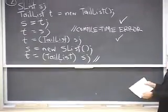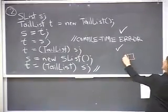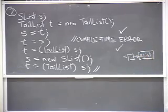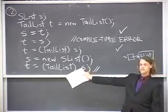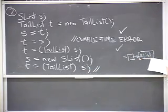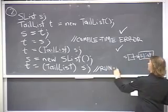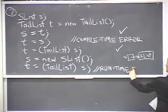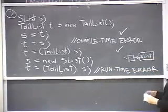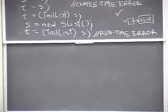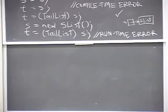At run time, S will point to an SLIST dynamic type. Java actually checks whether you told the truth at run time. When it tries to assign whatever S is pointing at to T, it checks and sees it's not a TALELIST after all - and you get a run time error. But not a compile time error. By the time Java finds out, it's too late.